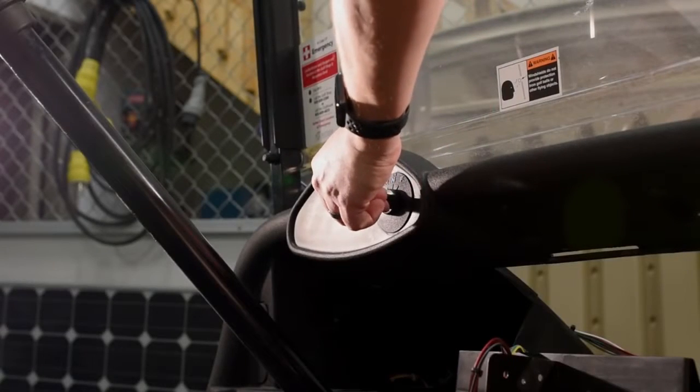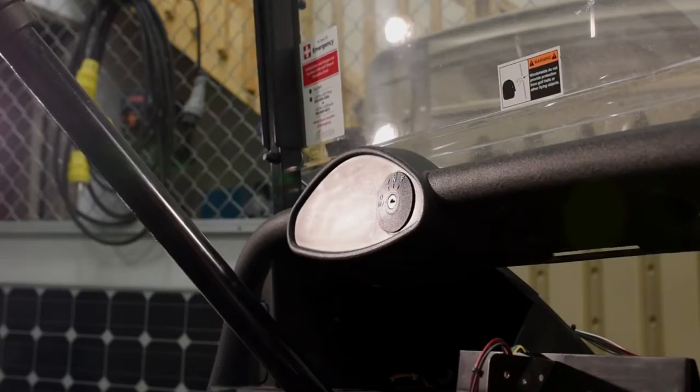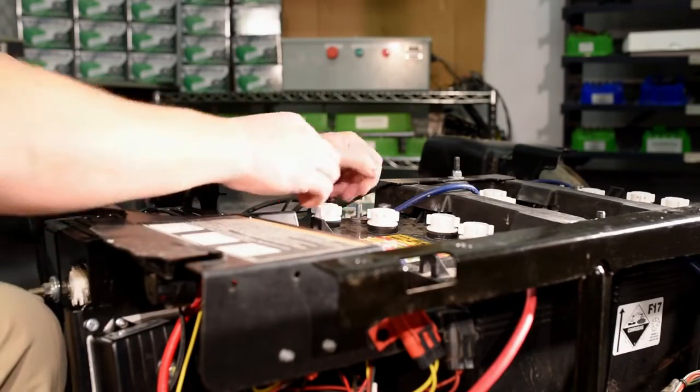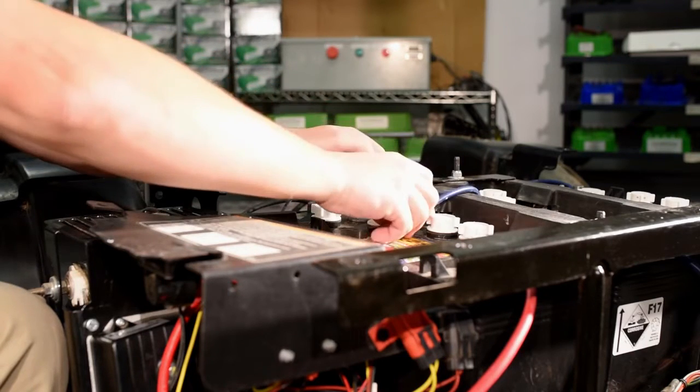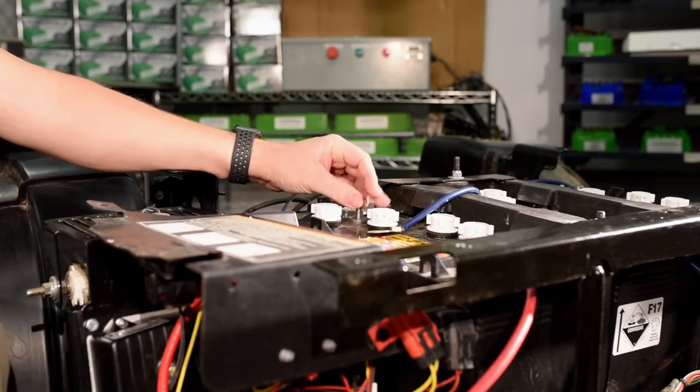First, make sure your key is turned off and remove it from the ignition. Next, disconnect the battery - you can disconnect the positives or negatives. I usually disconnect it from the middle of the pack. Make sure you don't have any other accessories connected.